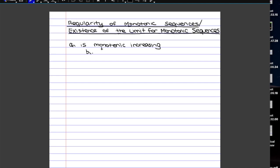Keep in mind that the opposite is not true. So if a sequence is bounded, it doesn't have to be increasing — it doesn't have to be monotonic at all, actually. And if instead the sequence is monotonic increasing and unbounded, we can be sure that it's going to be divergent to plus infinity.